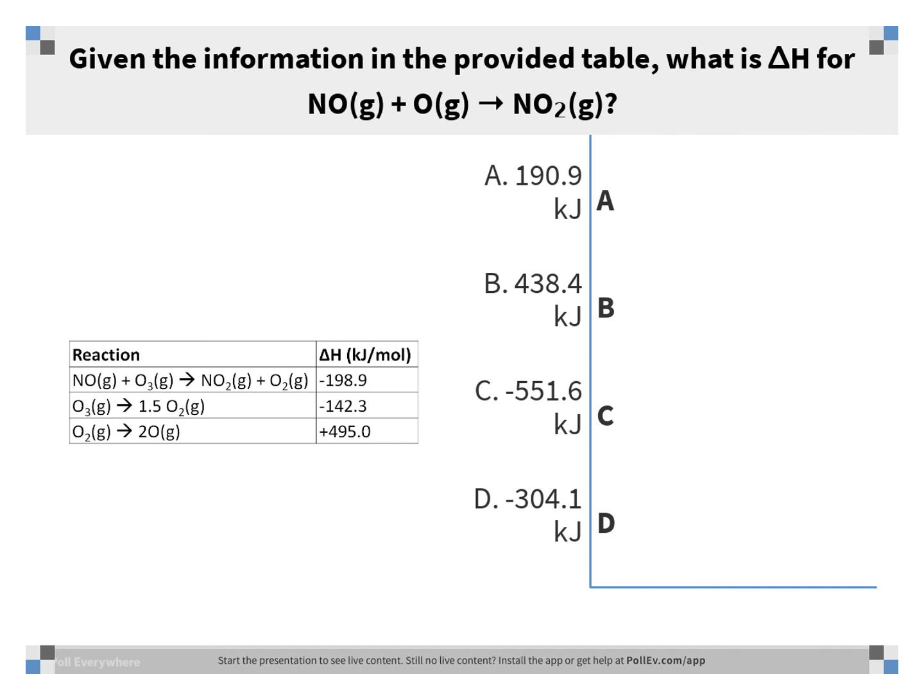The first equation is fine as is — it has NO and NO2 in it, both with a coefficient of 1, which is what we want in our final equation, and both molecules are on the correct side of the equation. So we're going to leave reaction number 1 alone. Reaction number 3 has oxygen in it but is on the incorrect side and has an incorrect coefficient, so we have to reverse the equation and divide by 2. For delta H, we would change the sign and divide by 2.